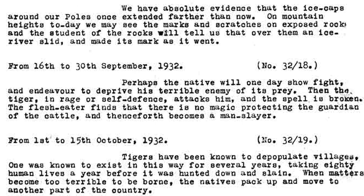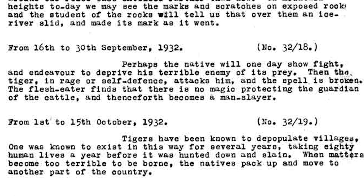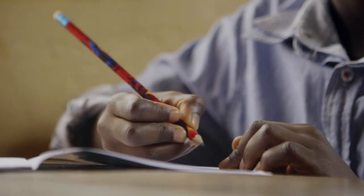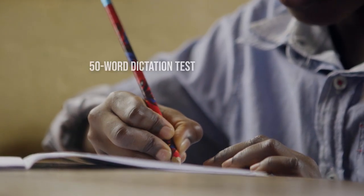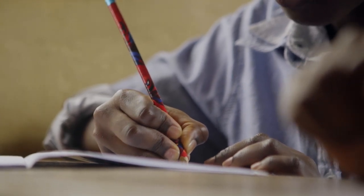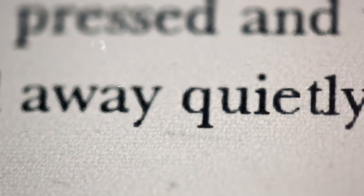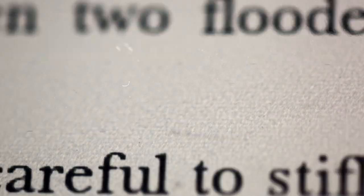"Tigers have been known to depopulate villages. One was known to exist in this way for several years." This is an example of a passage used in a 50-word dictation test used for screening migrants. The dictation test appears simple enough; however, the officer could administer it in any European language and it could be given to one person an infinite number of times. Eventually the policy was changed so that any prescribed language could be used, and after 1909, unsurprisingly, no one managed to pass the test.